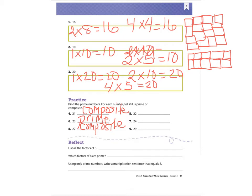On the reflect, it says list all factors of eight. Your factor chart will be helpful here. I know that one and eight are factors of eight, and I know that two and four are factors of eight — two times four is eight.